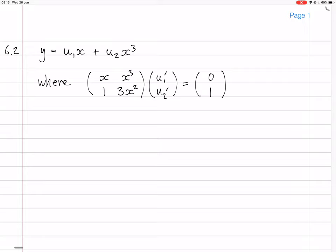And now we need to solve this matrix equation to find the u₁ and the u₂ dash. So this says that u₁ dash, u₂ dash... I think I can probably solve this by inspection. So the x and x cubed have got to cancel.